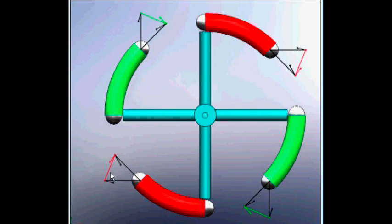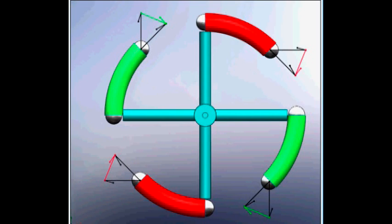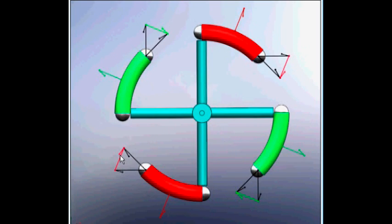And this vector also represents the direction in which the sum of the forces acted upon each ball as it progressed through each of its tubes. And so we can take that same basic vector now and flip it around 180 degrees and locate them at the midpoint of each of the ball's trajectories.